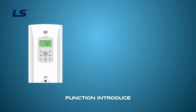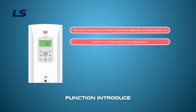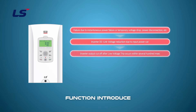When starting the inverter, the input power may be cut off due to an instantaneous power failure, a temporary voltage drop, or power disconnection. When the input power is cut off, the DC link voltage inside the inverter decreases, and after a low voltage trip occurs within a certain time, the inverter cuts the output.